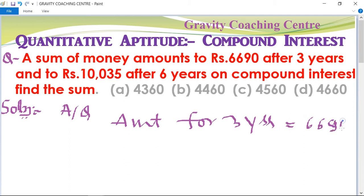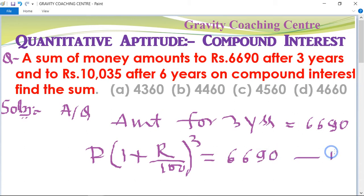The formula is P times (1 + R/100) to the power 3 equals 6690. Suppose this equation is the first.